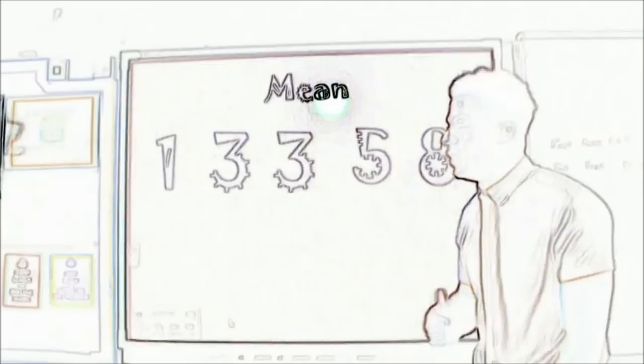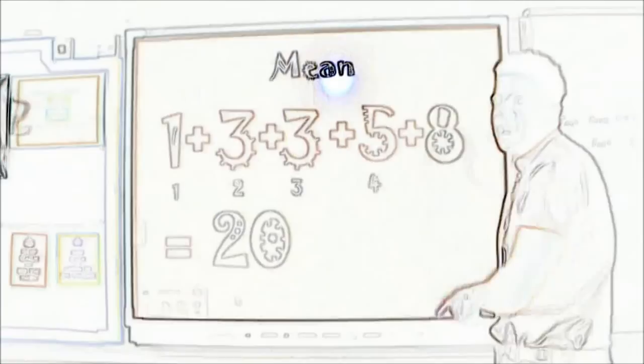Now let's look at the mean. The mean is: add them all to get the sum, and then divide by the total number of numbers — now we're set.